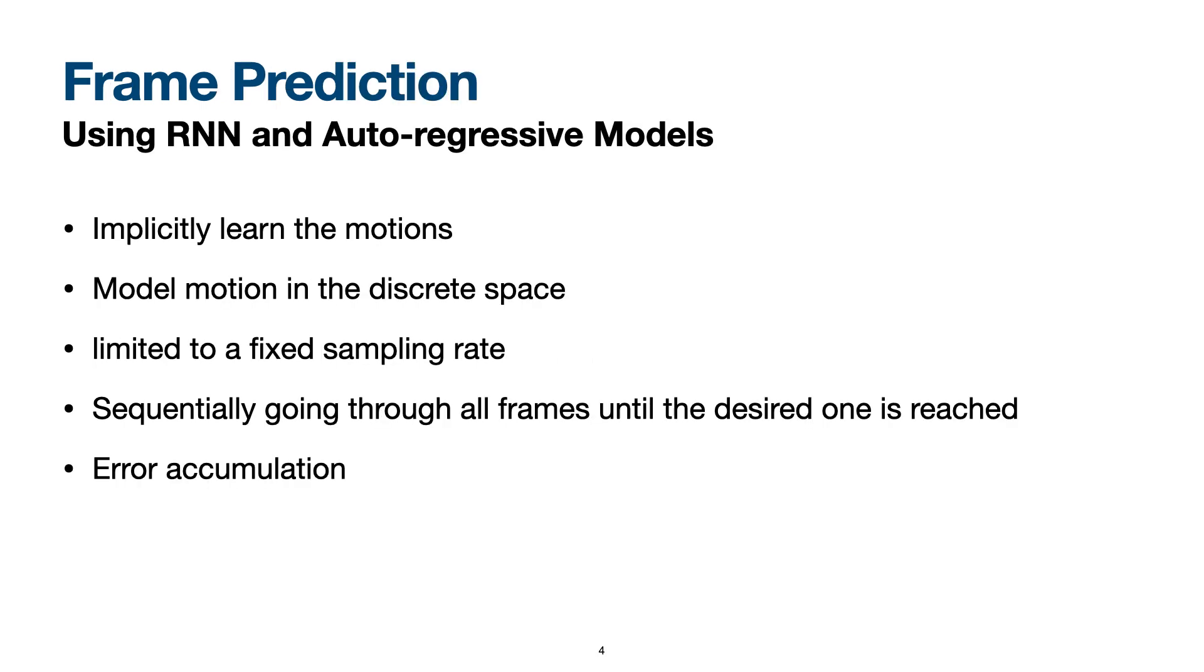To address the complex motion learning task, several approaches have been proposed over the last years and in particular recurrent neural networks have been popular. The RNN and autoregressive approaches learn the motions implicitly and model motion in the discrete time space. This approach is limited to a fixed sampling rate and it has to sequentially go through all frames until the desired point in the future is reached. This increases not only the inference time but it can also result in an error accumulation.